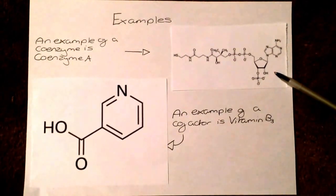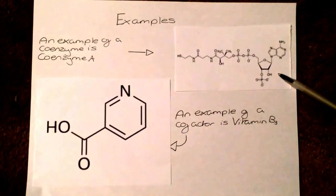Here are some examples. An example of a coenzyme is coenzyme A. Coenzyme A is needed in many metabolic pathways including aerobic respiration.